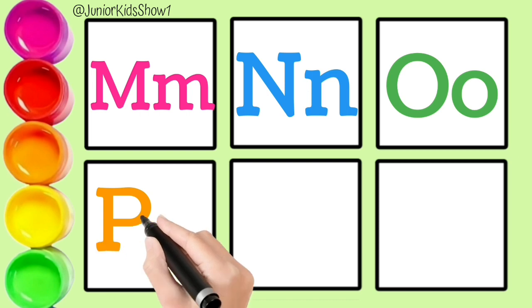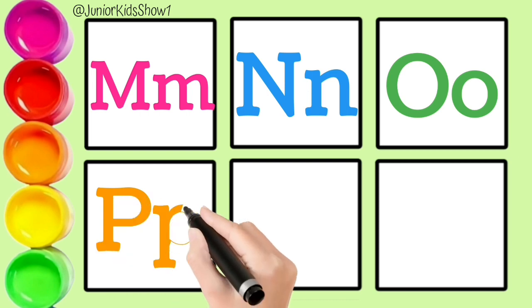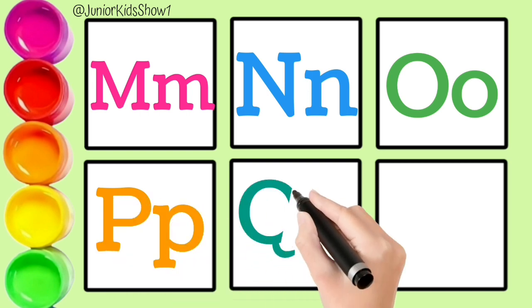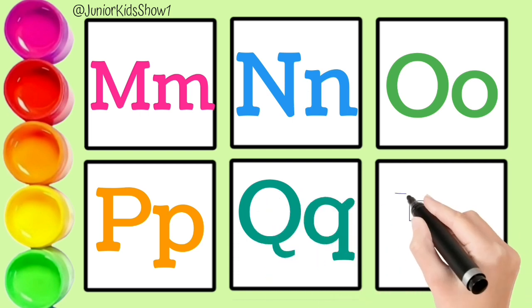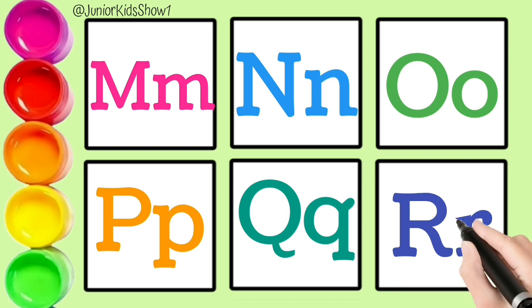P. P for Parrot. P. P for Parrot. Q. Q for Quill. Q for Quill. R. R for Rainbow. R for Rainbow.